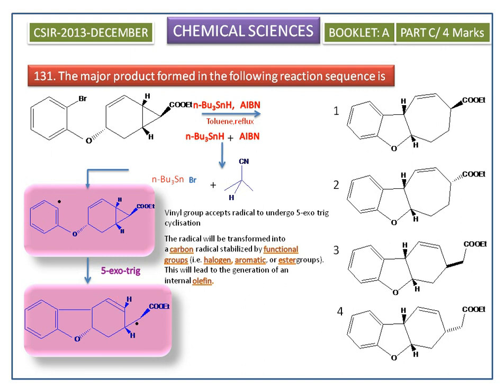This radical abstracts hydrogen from tertiary butyl tin hydride, quenching the radical. Now we examine the stereochemistry of this product.